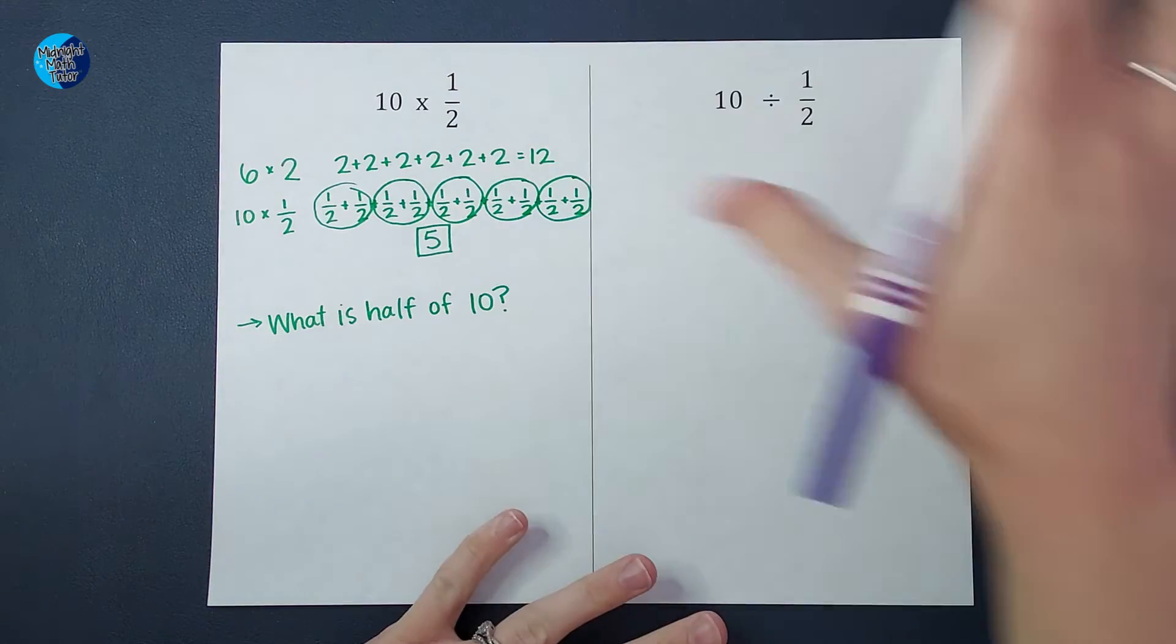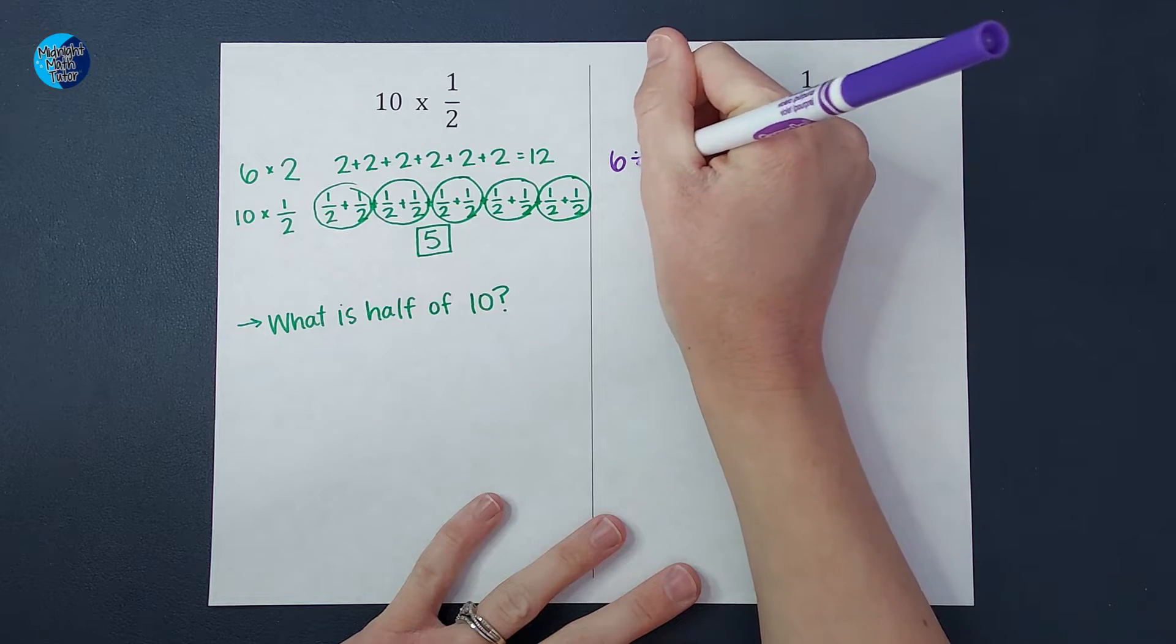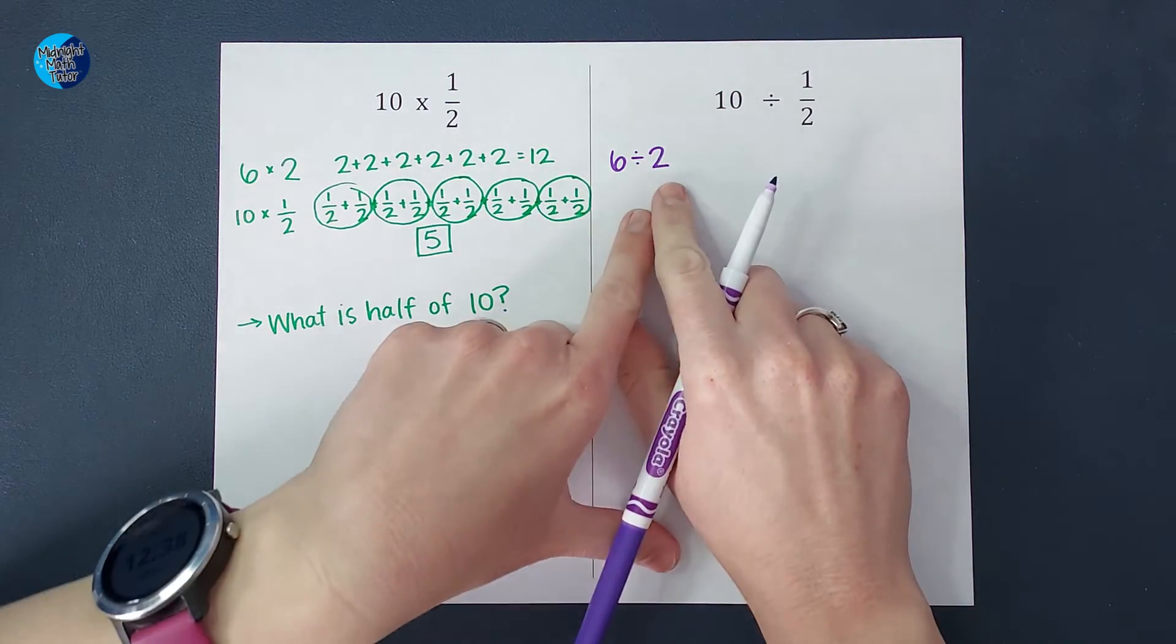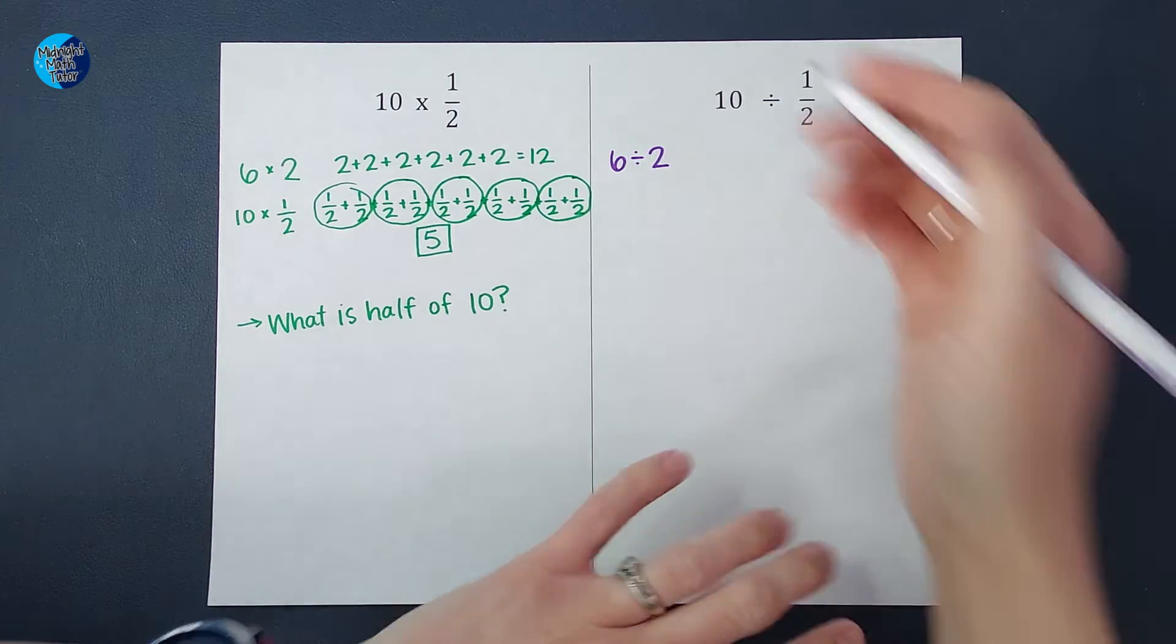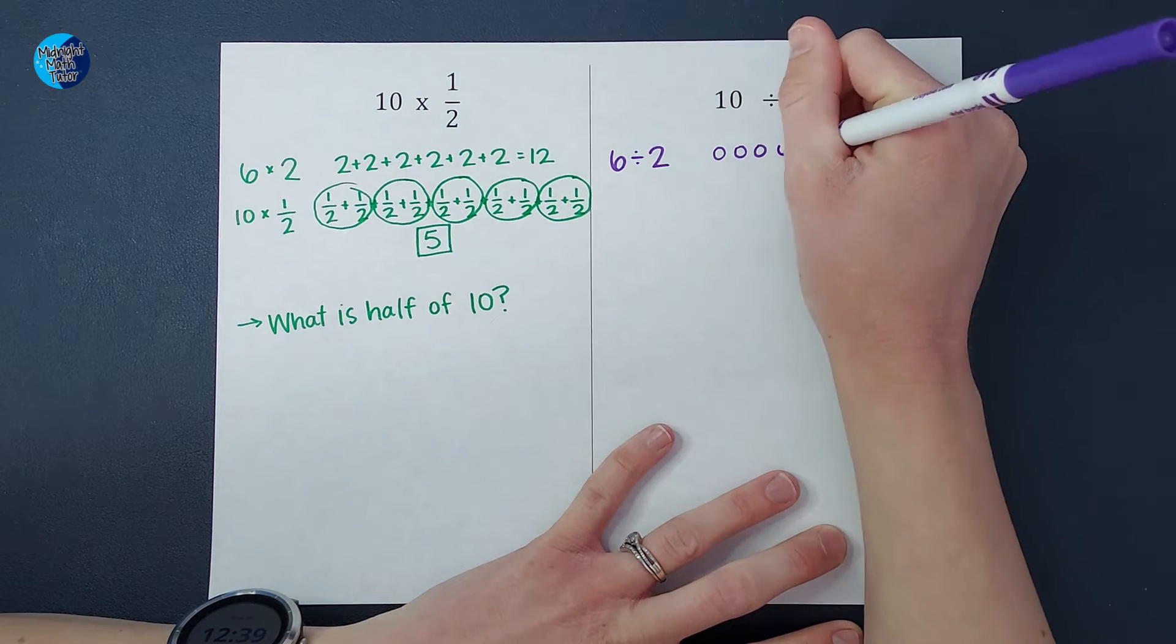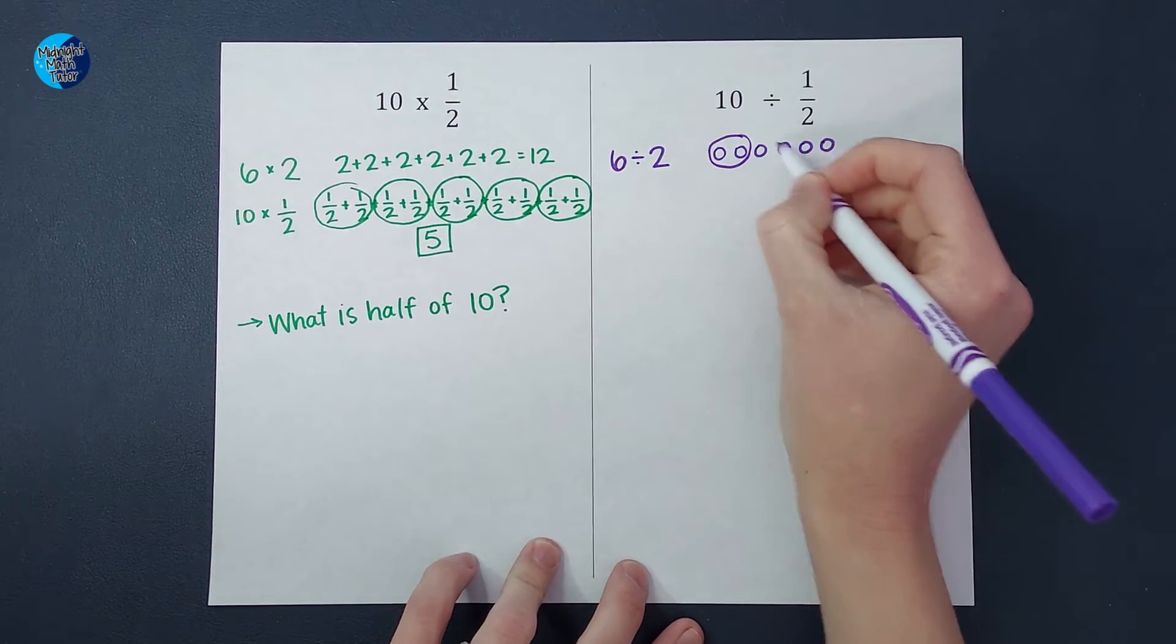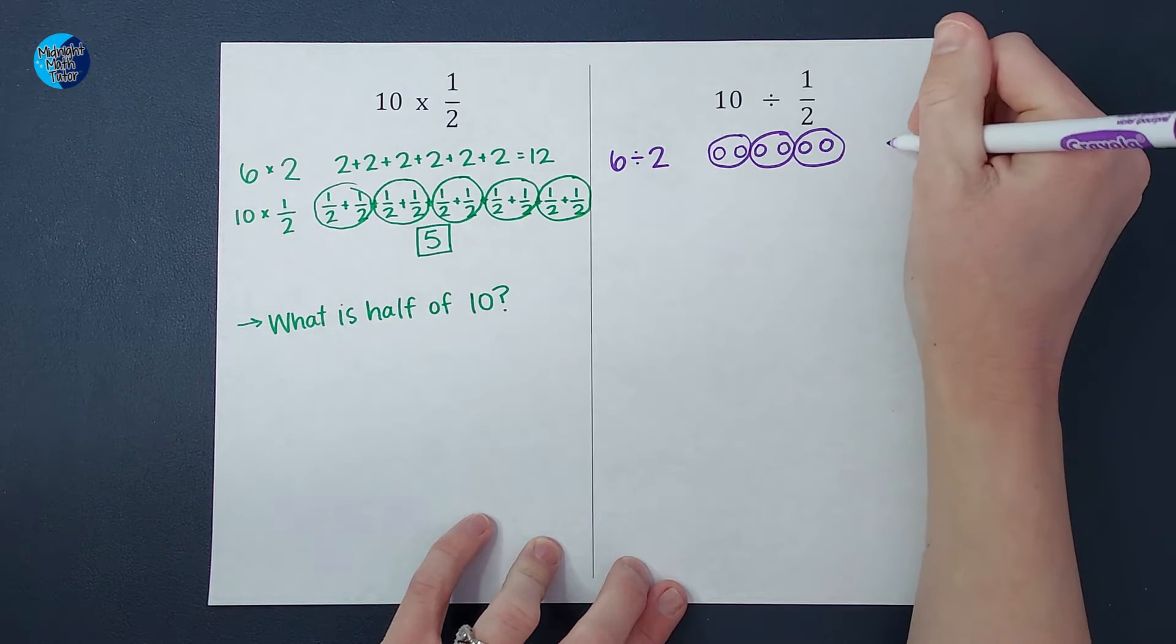So again, we're going to look at it without fractions for a second. So if I have six divided by two, what that's asking me is how many times does two go into six or how many twos are in six? So if I have like six circles, say, how many twos are there? Well, there's one, two, three. So six divided by two is three.